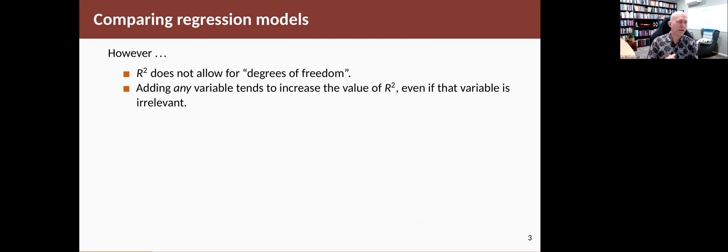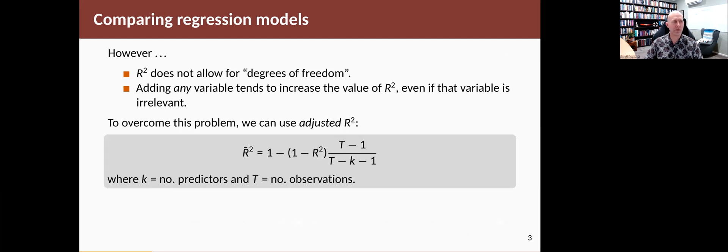The reason for that is it doesn't allow for the degrees of freedom. It doesn't allow for the extra coefficients that might be attached to not very useful predictors. And so adding any variable tends to increase the value of R², even if that variable is irrelevant to the problem.